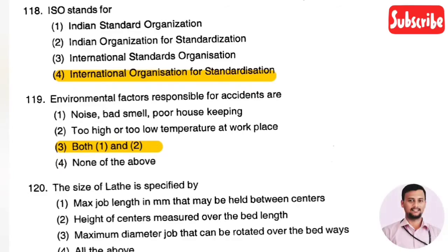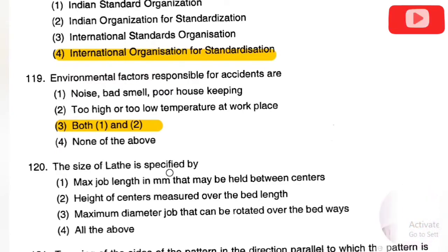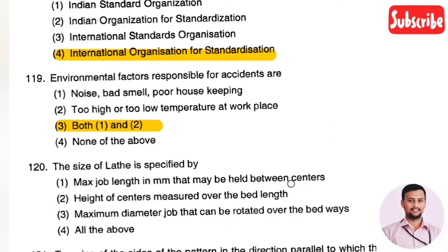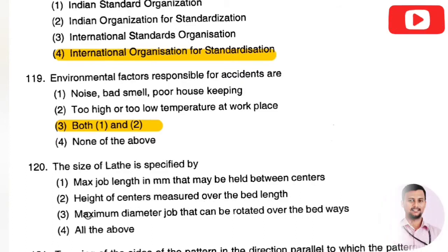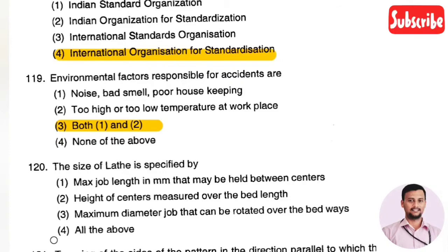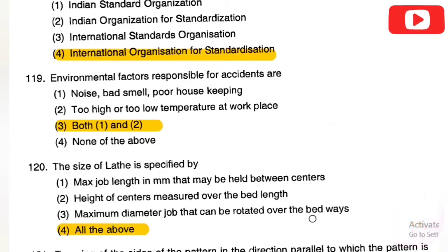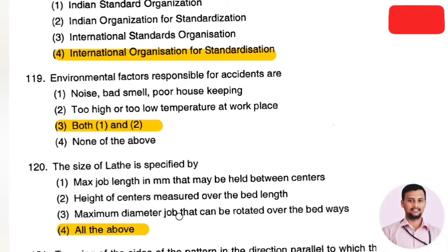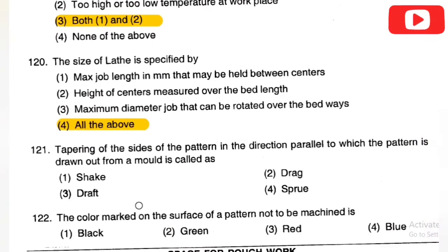The next question: the size of a lathe is specified by — Option 1: maximum job length in mm held between two centers, Option 2: height of center measured over the bed length, Option 3: maximum diameter of job that can be rotated over the bed, Option 4: all of the above. The right answer is Option 4, all of the above. The lathe size is defined by all three parameters.